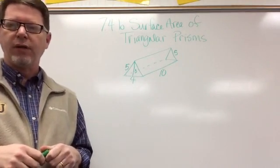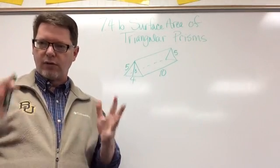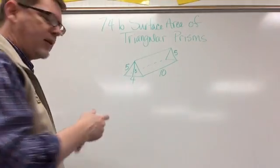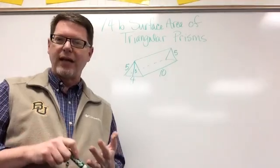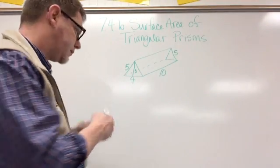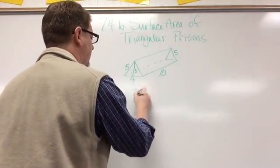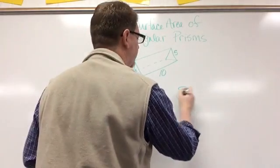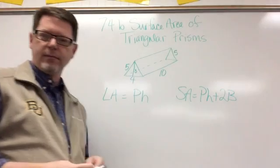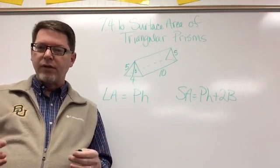So now we're going to look at our formula and plug in our numbers to find the surface area. Remember, there are two types of surface area: lateral area and total surface area. Lateral area is capital P times H, and surface area is capital PH plus 2B. Capital P is the perimeter of the base.